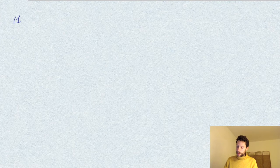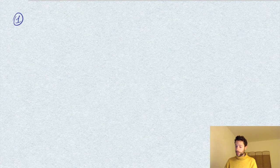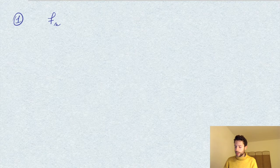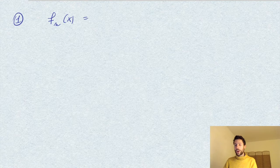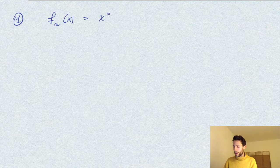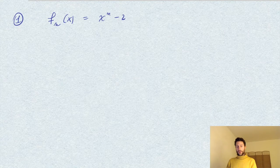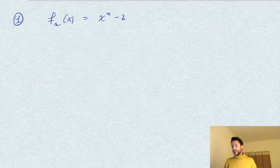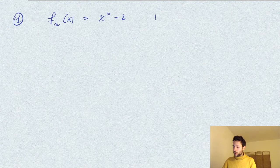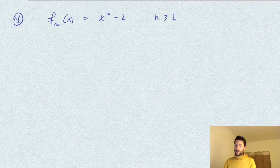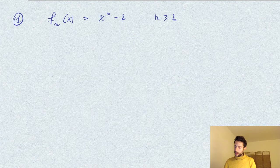So for the first case of R as an extension of Q, we observe that we have a sequence of polynomials, say f_n(x) of the form x^n - 2. And this, of course, is for any n at least 2.